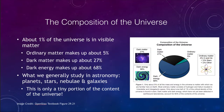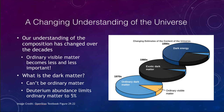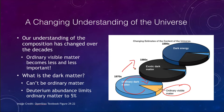How has our understanding of this changed over time? Not too long ago, just back in the 1970s, ordinary visible matter was thought to be a larger percentage of the universe. From the 70s to the 80s, that changed, and ordinary visible matter became only a tiny slice, with exotic dark matter seeming to be a larger percentage. So ordinary visible matter has become less and less important over time.